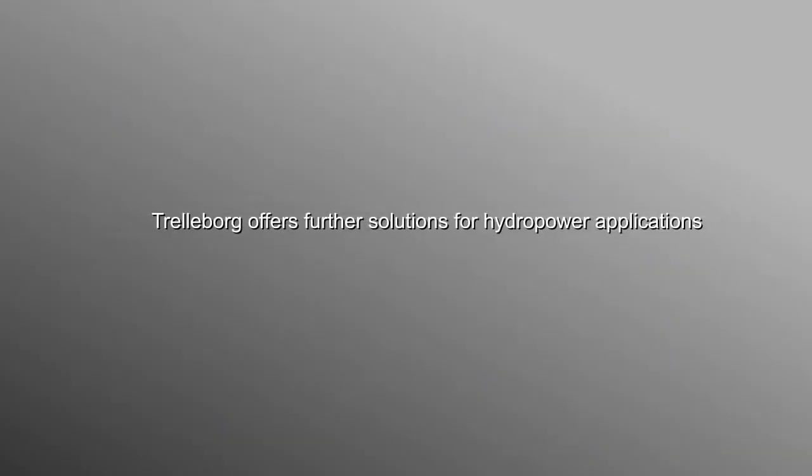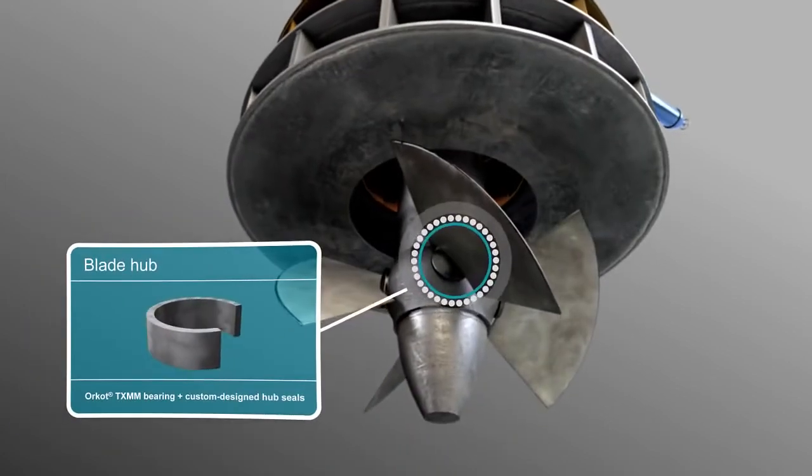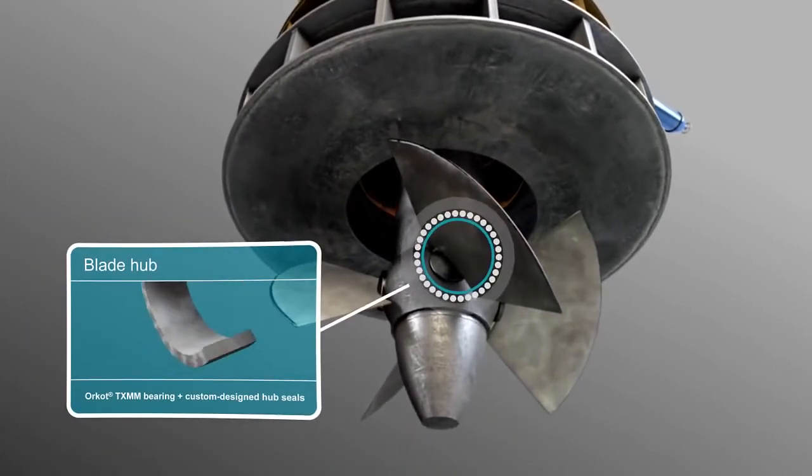Let's look at some of the other solutions provided by Trelleborg for hydro applications. For example, in this Kaplan turbine, Trelleborg offers Orcott TXMM bearings and custom-made seals.